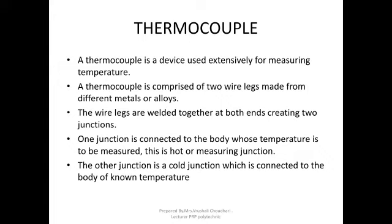A thermocouple is composed of two metal wires from different metals or alloys. The two wire legs are welded together at both ends, creating two junctions. One junction is connected to the body whose temperature is to be measured — that is called the hot junction. Another junction is called the cold junction, which is connected to a body of known temperature.